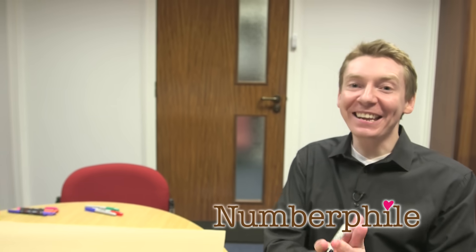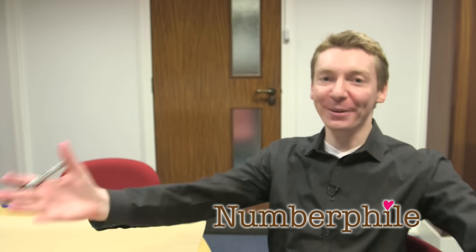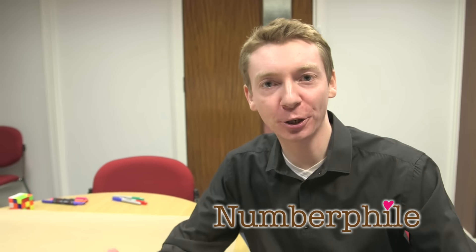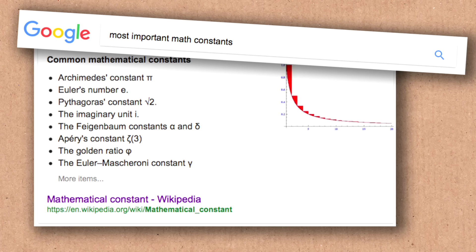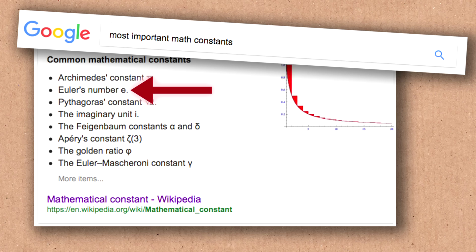We're going to talk about E, the big famous constant E. It's one of the famous mathematical constants, one of the most important. It goes along with pi, the golden ratio, and the square root of 2. There are constants in maths that are the most important constants, and E is one of those constants.